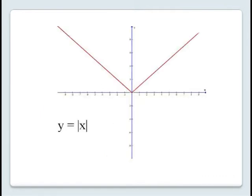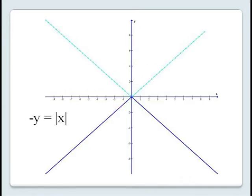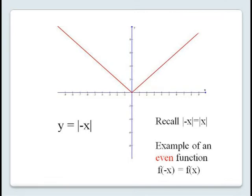The equation y equals the absolute value of x has an interesting quirk. If we replace y with minus y, the graph of minus y equals the absolute value of x will be our original v-shape reflected across the x-axis. But if we replace x with minus x, we mirror our graph across the y-axis — and in this case the graph is the same, because the absolute value of minus x equals the absolute value of x. A function f(x) with the property that f(minus x) equals f(x) is called an even function, and the graph will be symmetric about the y-axis.